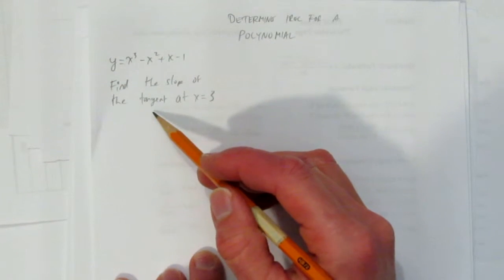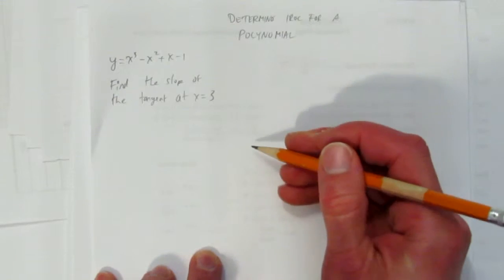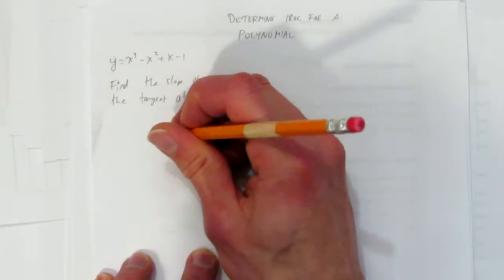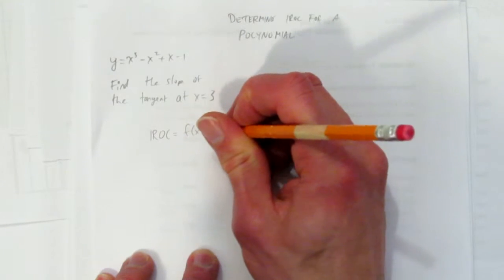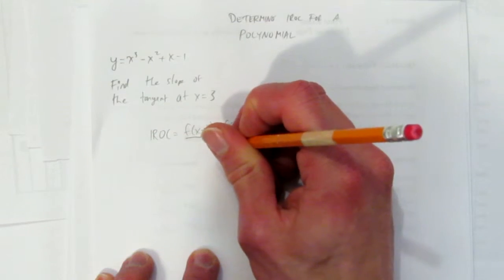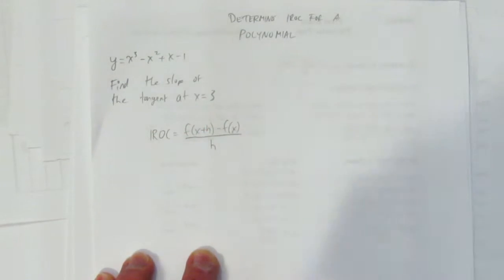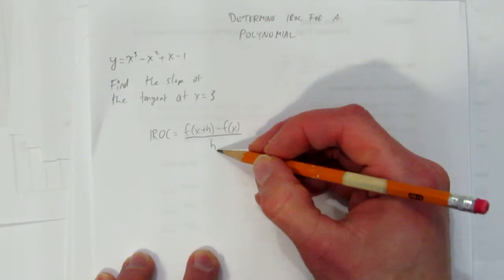The word tangent for us is synonymous with IROC, or instantaneous rate of change. The formula for instantaneous rate of change is f at x plus h minus f at x, all over h. You'll want to learn this formula. Notice that it's very similar to the IROC formula. For us, h is always going to be 0.001.